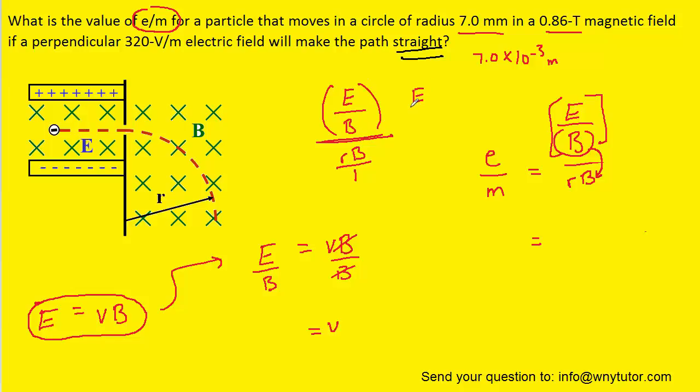So when we multiply, we're going to be left with the electric field in the numerator, and then b times rb will be equal to rb squared.